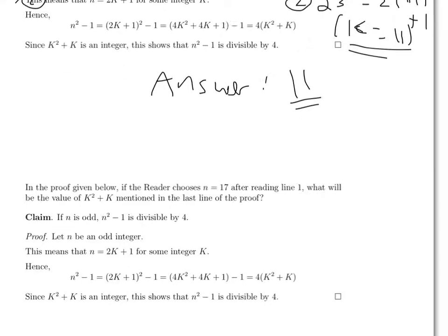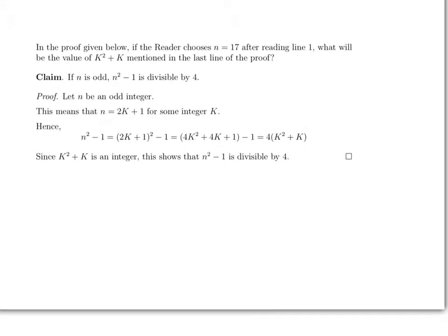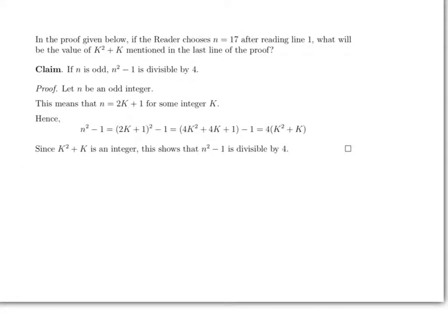The other kind of problem, I'm going to use the same proof here because obviously the exact proof doesn't really matter. The other question asks about some value at the end of the proof, but again it has to do with making a choice for n in line 1. So in line 1, if I choose n equals 17,